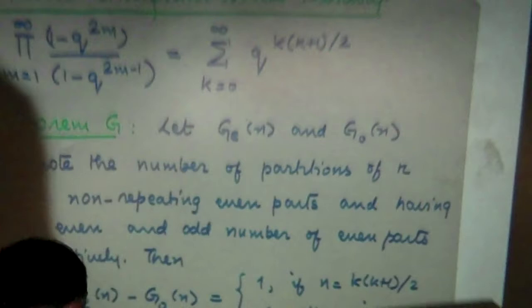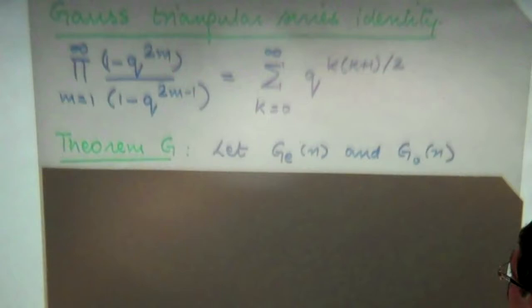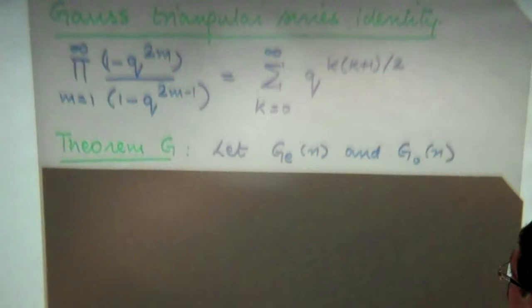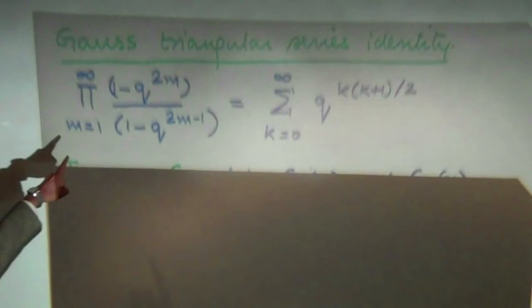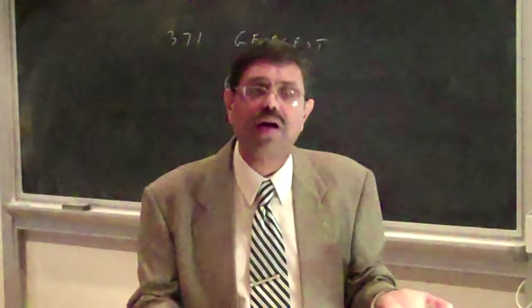Now I'll mention one other identity as a comparison — an identity I like to think of as almost equal in beauty and importance to Euler's pentagonal numbers theorem: the triangular series identity of Gauss. This is the product of (1 minus q to the 2m) divided by (1 minus q to the 2m minus 1), equal to the sum of the triangular numbers. The left-hand side is the generating function for partitions in which the evens cannot repeat and the odds can repeat, taking into account the parity of the number of even parts. Classifying by parity of even parts gives a perfect split except at the triangular numbers where the difference is 1. I call this the Gauss triangular numbers theorem.